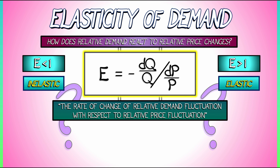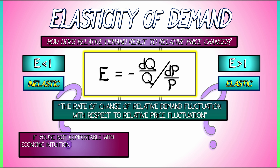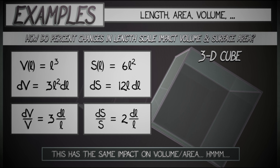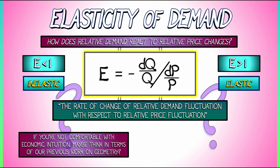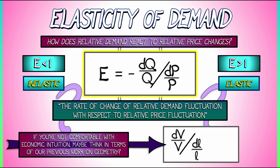You can understand this quantity from the perspective of examples, but if you want to understand it mathematically and you're not comfortable with some of the economic intuition, maybe it would be a good idea to think in terms of our previous work on geometry. Recall that for a ball, a cube, really any solid three-dimensional object, the ratio between the relative rate of change of volume and the relative rate of change of length scale equals 3. This is a similar sort of measurement — volume is highly elastic with respect to length scale. It's cool to take geometric intuition and apply it to economics definitions, or going backwards, taking economics intuition and applying it to geometry. That's a really good skill to cultivate.